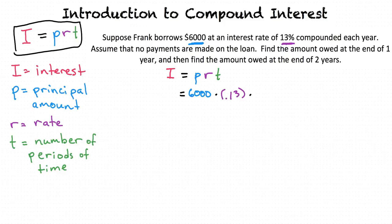Yes, you're right. We are solving for interest that is compounded once every 1 year period, and this is the first 1 year period, so T is 1. After calculating 6,000 times 0.13 times 1, the result is I equals $780.